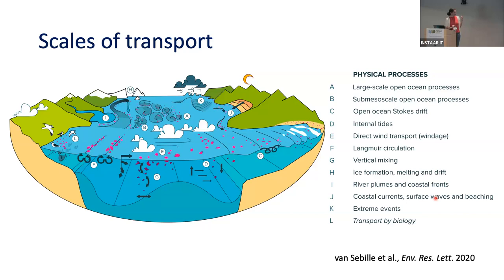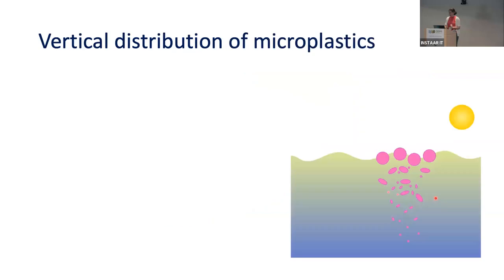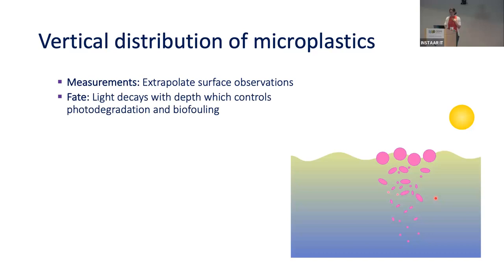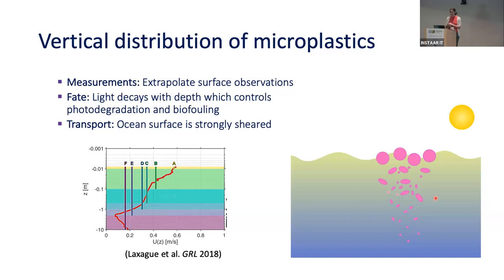I think about a couple of these different processes, but today I'm going to focus on just one: the vertical distribution of microplastics. Imagine we're at the surface of the ocean with some buoyant particles collecting near the surface. Why might we care? Most measurements are taken at the surface, so we need to know the vertical distribution to extrapolate. Light decays with depth, and plastic does photodegrade with light, so vertical distribution controls their fate and also their transport.